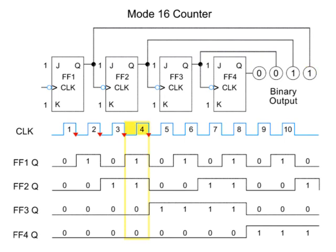Pulse 4 again toggles Q1 back to 0, with Q2 toggling to 0, and Q3 to 1, with Q4 unchanged, and the output is 0100.